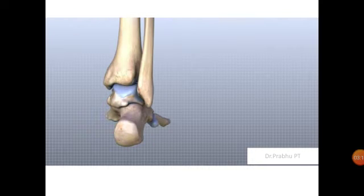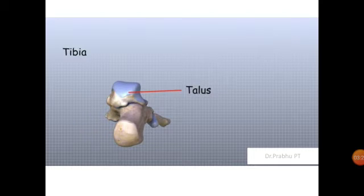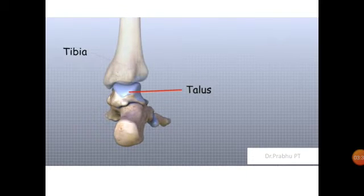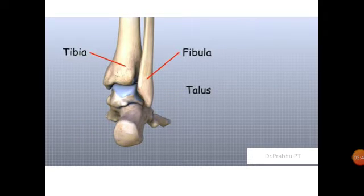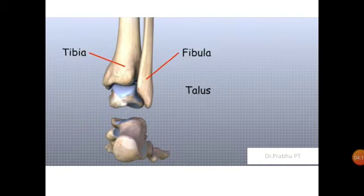Now we will see each bone separately. Here you can see the talus; the talus bone joints with the tibia. The talus, tibia, and fibula — these three bones together form the ankle joint. There are four articulating surfaces. The trochlea of the talus is visible here, and the malleolar mortise is formed by the tibia and fibula — the lateral and medial malleoli.